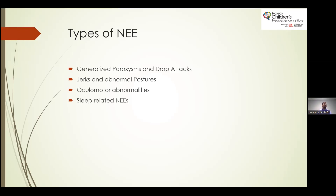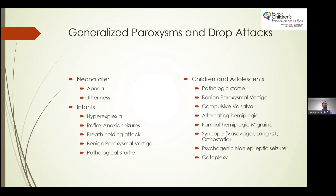The four categories are: generalized paroxysms and drop attacks; jerks and abnormal postures; oculomotor abnormalities; and sleep-related non-epileptic events. In the category of generalized paroxysms and drop attacks, I divided these into different age groups. In neonates, there is apnea and jitteriness, which will be addressed in a separate talk on neonatal seizures.